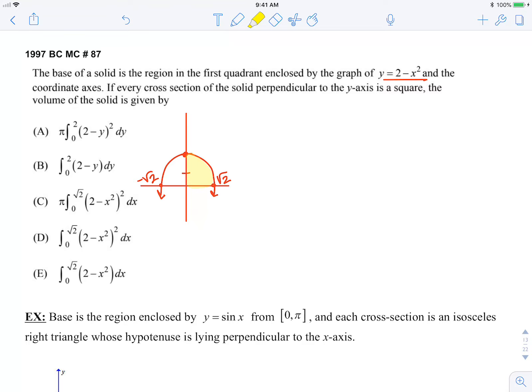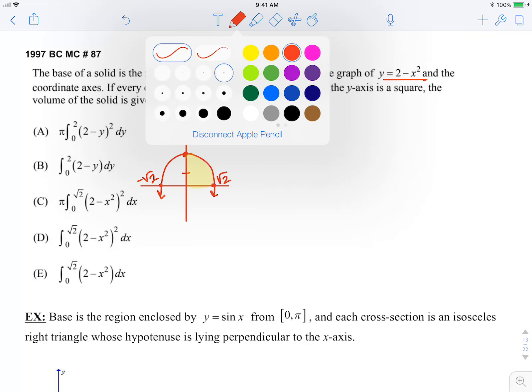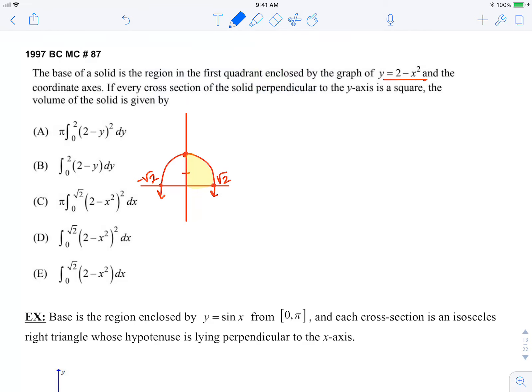They said every cross-section is perpendicular to the y-axis. So that means our cross-section is perpendicular to the y-axis, and everything sticking out is a square. If it's perpendicular to the y-axis, then the cross-section is dy thick. So I need to find the area of that cross-section.